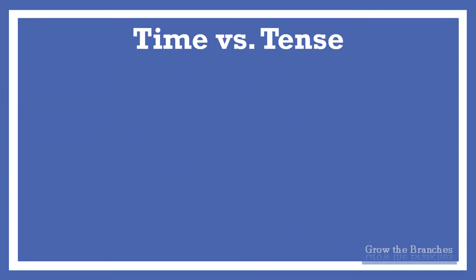If you really want to master tenses in English, you need to understand the difference between both time and tense before starting learning tenses or aspect. Learning how to use verbs correctly involves more than looking up their meanings in a dictionary. You must also understand how the form of a verb affects its meaning. If you put a verb in the present tense, it doesn't always mean that you are expressing an action happening at the present time. This is why a clear distinction should be made between tense and time.